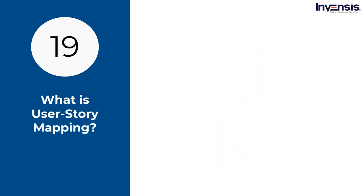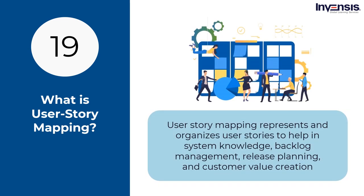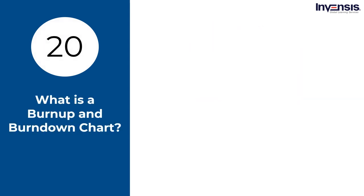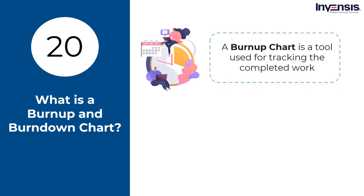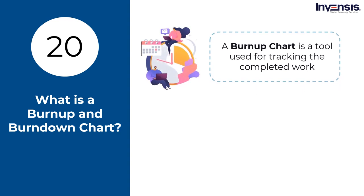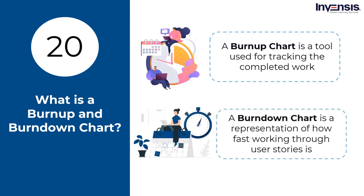What is user story mapping? User story mapping represents and organizes user stories to help in system knowledge, backlog management, release planning, and providing customer value. User stories are arranged according to their importance on the horizontal axis and with increasing degrees of sophistication on the vertical axis. What is a burn-up and burn-down chart? A burn-up chart tracks completed work and represents the overall amount of work to be done during a sprint or project. A burn-down chart is a representation of how fast the team is working through user stories, measuring total effort against the amount of work completed in each iteration.